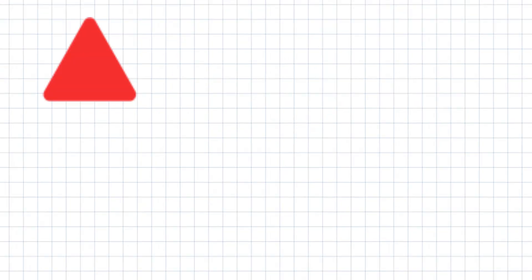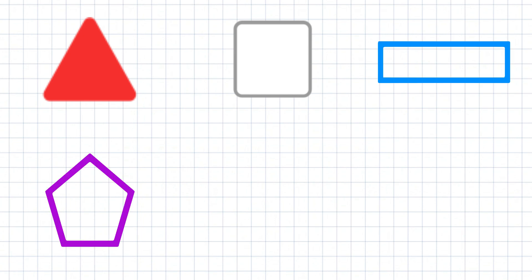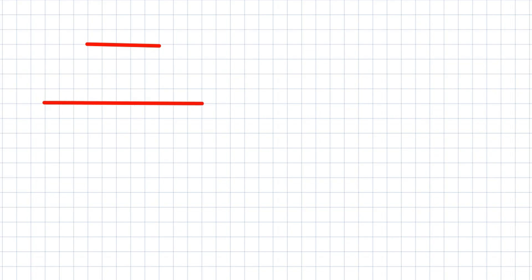A shape with three sides is called a triangle. A shape with four sides is called a square or a rectangle. A shape with five sides is called a pentagon. A shape with six sides is called a hexagon.